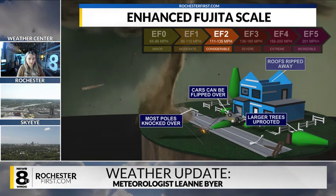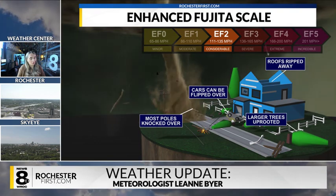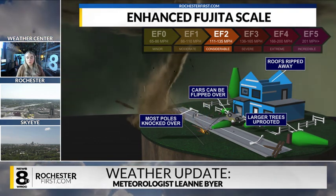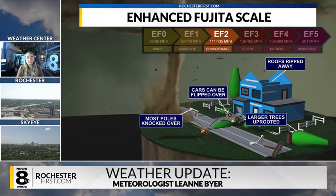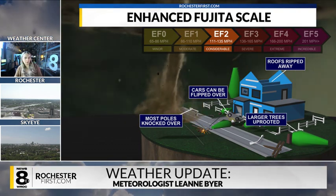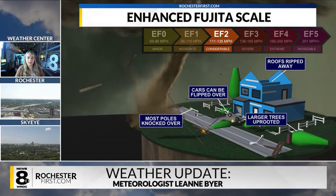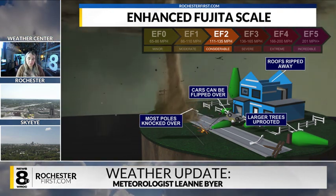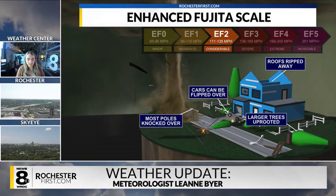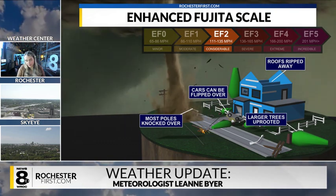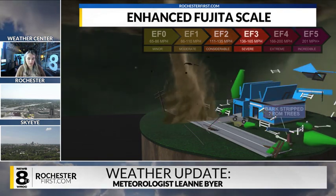Heading now to EF2 tornadoes, which I believe is the strongest tornado that has ever been recorded in western New York. The wind speed range is between 111 and 135 miles an hour, and the damage for these can be considerable. Cars can be flipped over, most poles are generally knocked down, roofs are typically ripped away, and larger trees can be uprooted — definitely more damage than the first two levels.